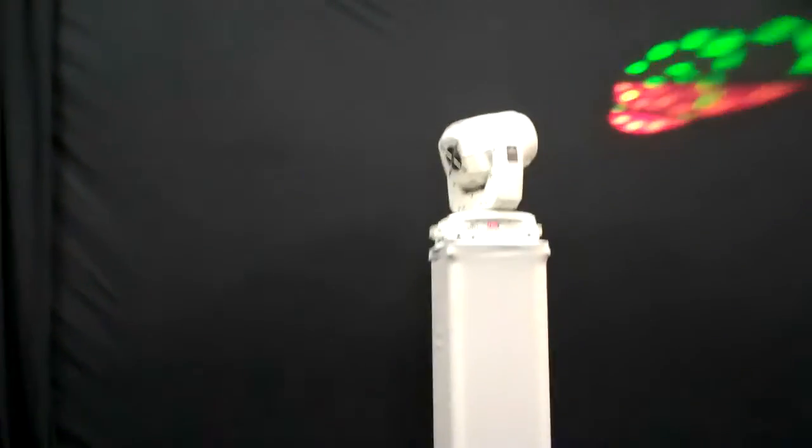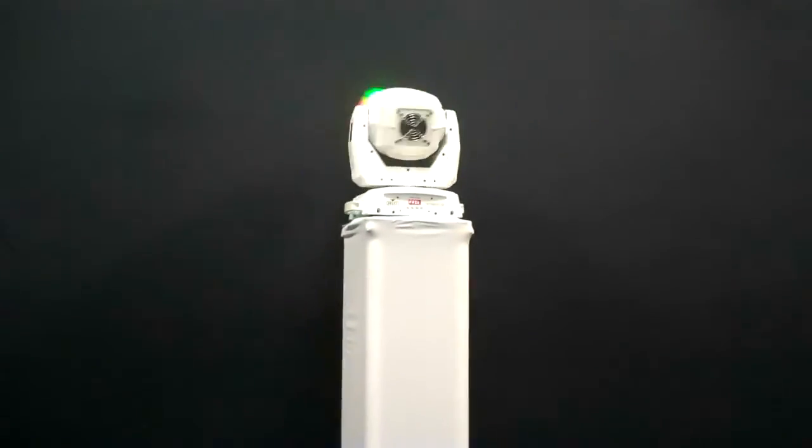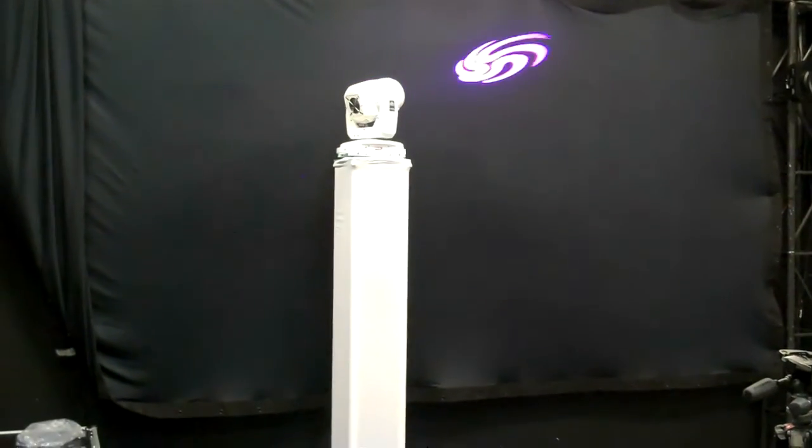So this is the Intimidator 350 and the weight on the 350 is just about 23 pounds. Now if you're using a moving head, again, there's absolutely no movement whatsoever. I'll back up a little bit more here. There's no movement whatsoever on this totem. It's perfectly still.